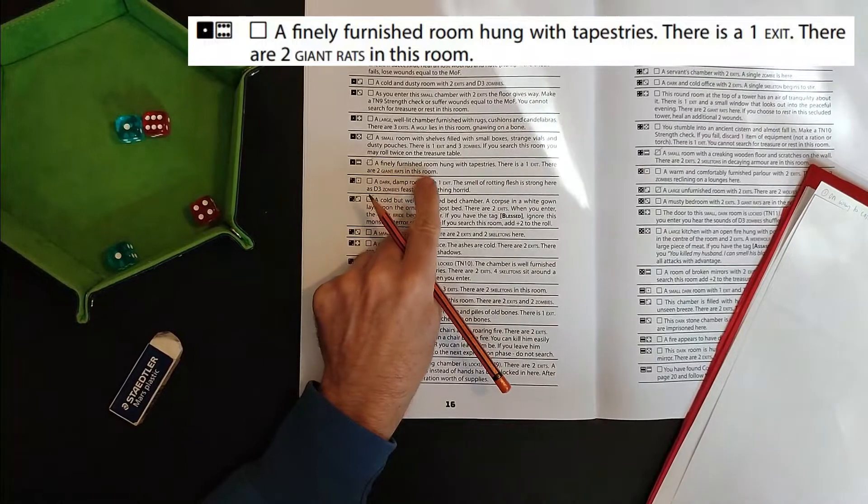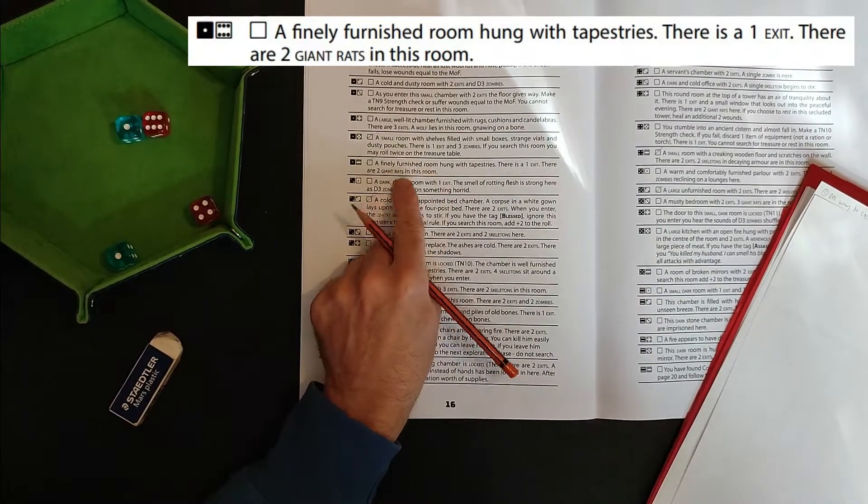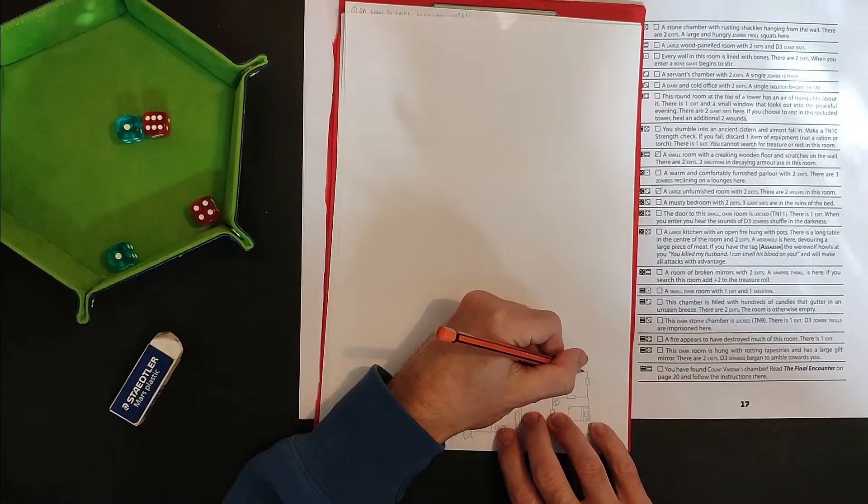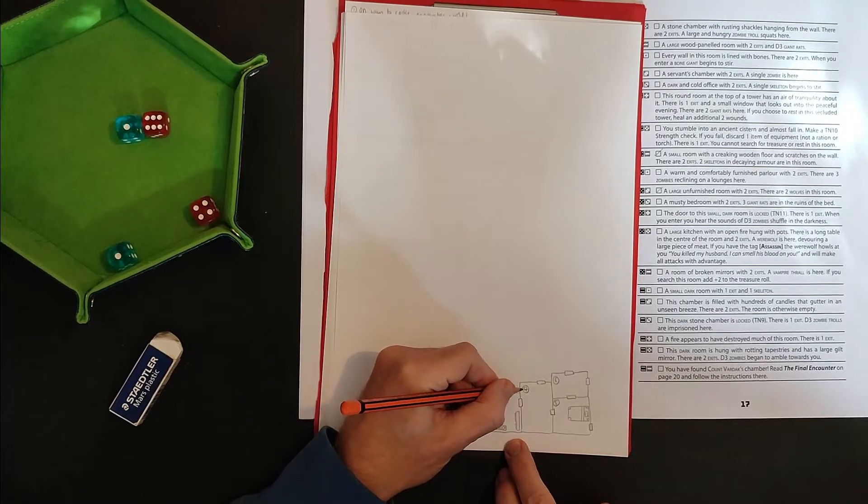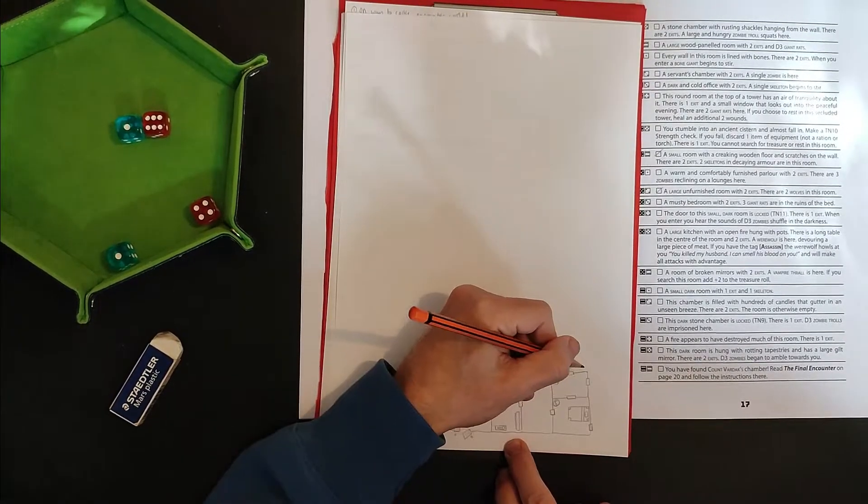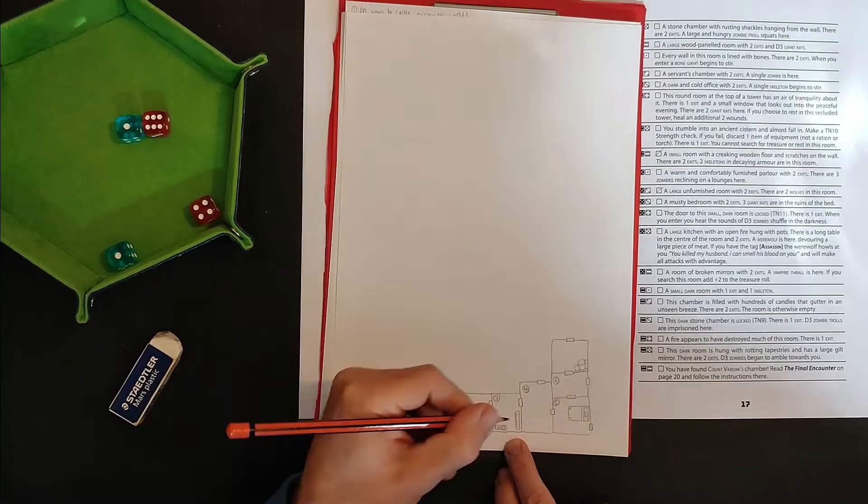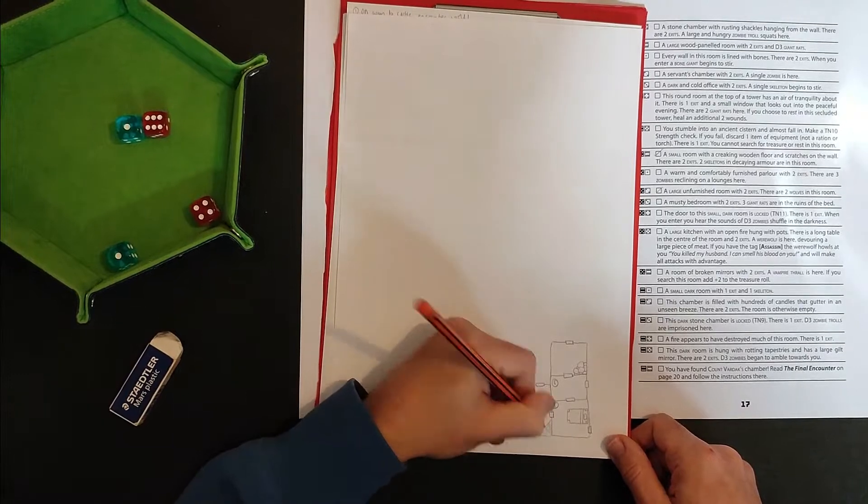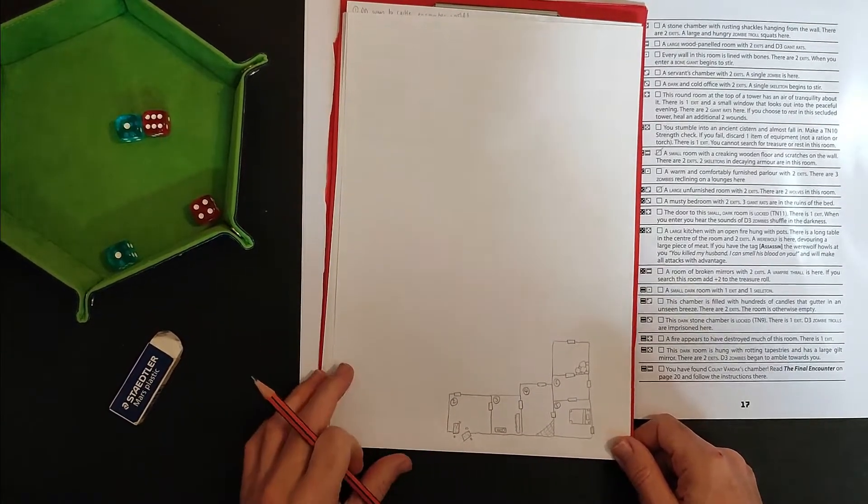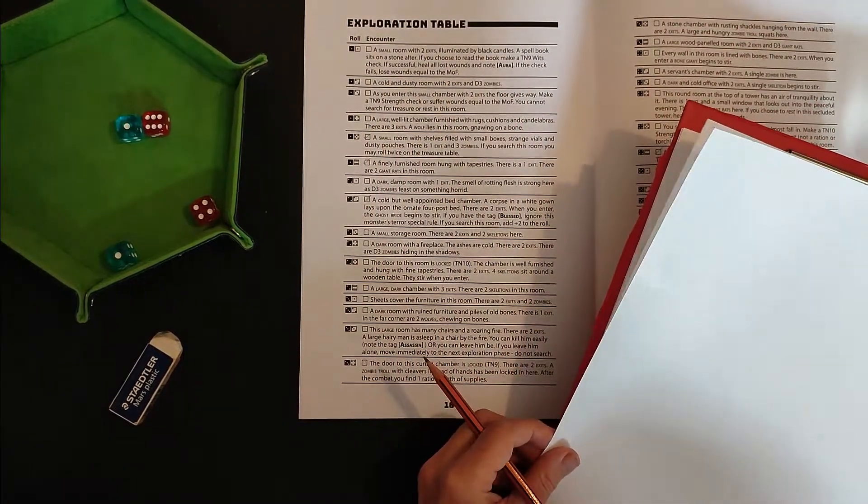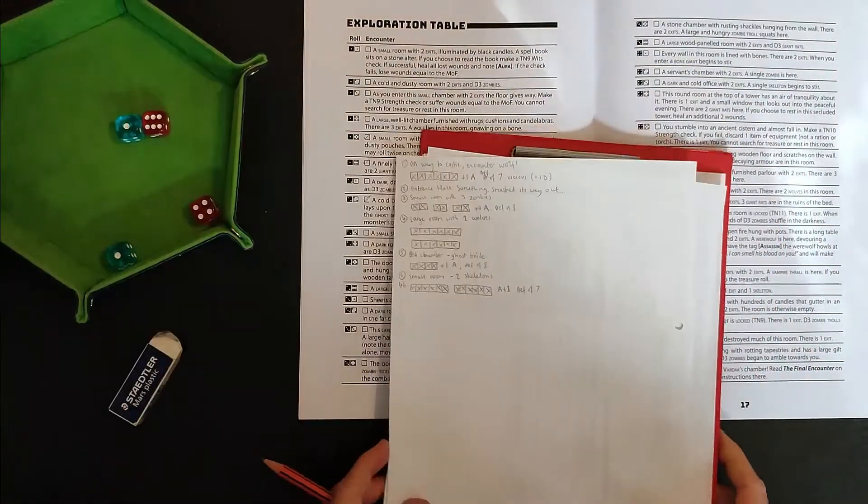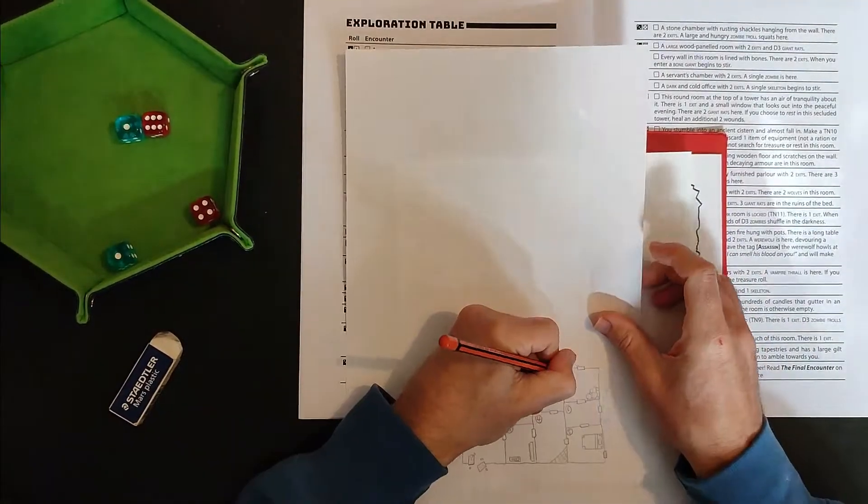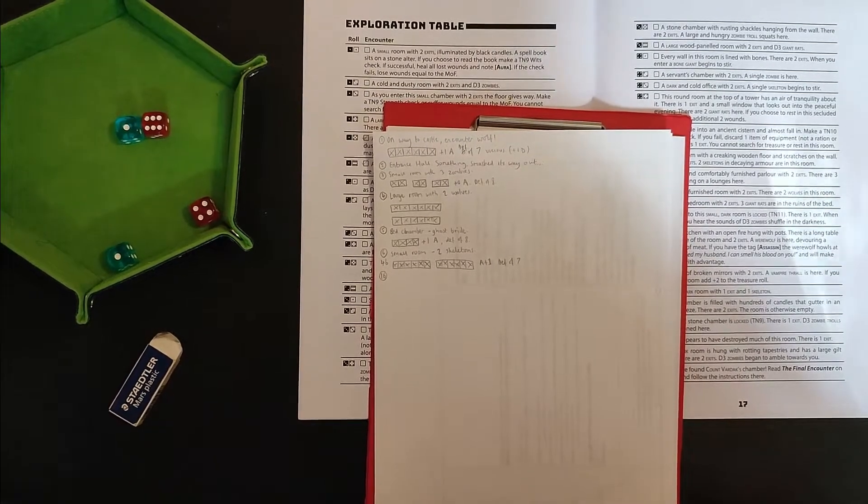16. A finely furnished room hung with tapestries. There is one exit. There are two giant rats in this room. Okay. Well, hopefully giant rats aren't too terrifying. This was supposed to be a big room. I feel like I should have made that slightly bigger to differentiate between a big room and a regular room, but it doesn't really matter. Put a pile of rubble in the corner of this room just because, just because, you know, there's something to do, isn't it? Put a cobweb in the corner of that room. Doesn't really look like a cobweb actually. Okay. Right. So where are we at? We're in room 16. I think I am going to start using those room numbers. So that's room 16.